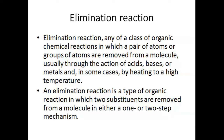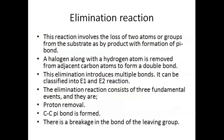An elimination is a type of organic reaction in which two substituents are removed from a molecule in either a one or two step mechanism. This reaction will involve the loss of two atoms or groups from the substrate as a byproduct with formation of a pi bond. A halogen along with a hydrogen atom is removed from adjacent carbon atoms in order to form a double bond. The elimination will introduce a multiple bond, and this can be classified into two types: E1 and E2 reactions.